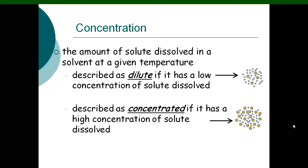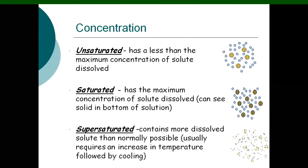It could be dilute or concentrated. Unsaturated has less than the maximum concentration of solute dissolved. Saturated has the maximum concentration of solute dissolved — you can see solid at the bottom of the solution. Supersaturated contains more dissolved solute than normally possible, which usually requires an increase in temperature followed by cooling. There are three types of concentration.